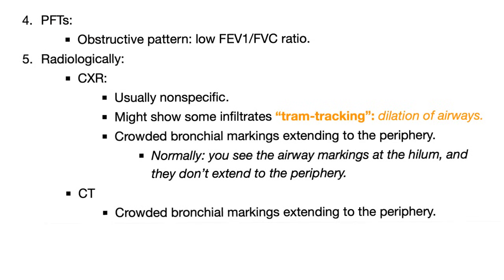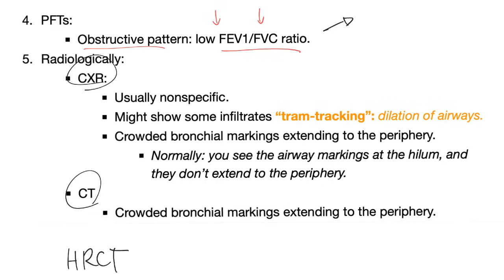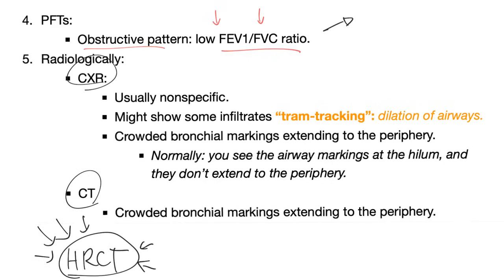Pulmonary function test will show an obstructive pattern: decreased FEV1, decreased FVC, and decreased FEV1/FVC ratio. For imaging: chest X-ray, CT, and high-resolution CT. High-resolution CT is very detailed but has significant radiation exposure.